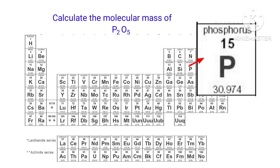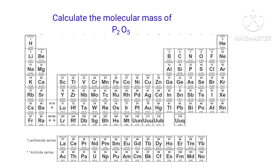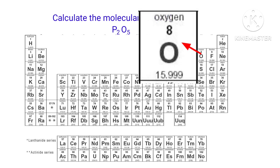The atomic mass of phosphorus is 30.974. The atomic mass of oxygen is 15.999.